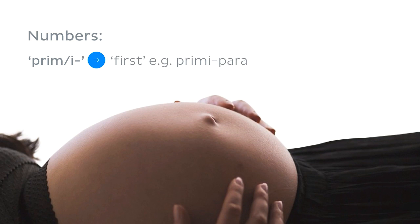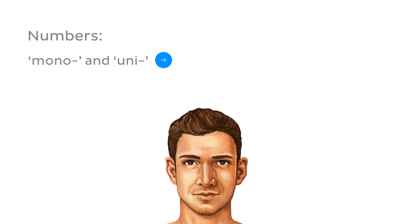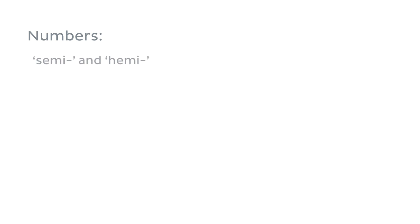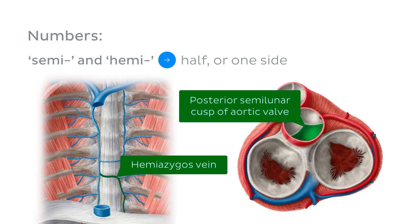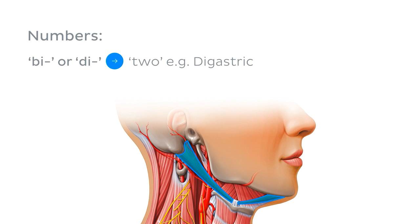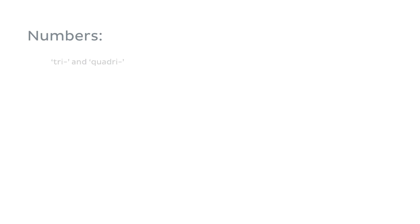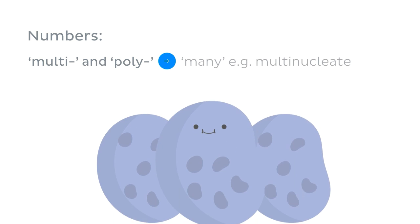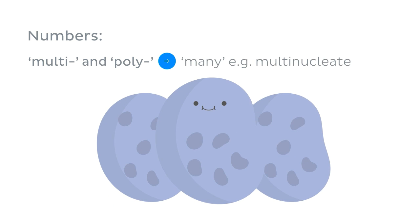First up are prefixes which provide numerical detail: 'prim' or 'primi' meaning first, as in primipara, a woman who has given birth once; 'mono' or 'uni' meaning one, as in unilateral, occurring on one side only; 'semi' or 'hemi' referring to half, as in hemizygous or semilunar; 'bi' or 'di' meaning two, as in digastric, a muscle with two bellies; 'tri' for three; 'quadri' for four, as in quadriceps, a muscle with four heads; and 'multi' or 'poly' for many, as in multinucleated, a cell with two or more nuclei.